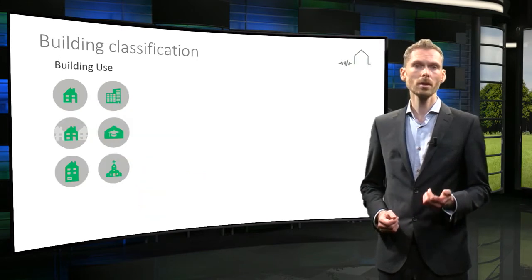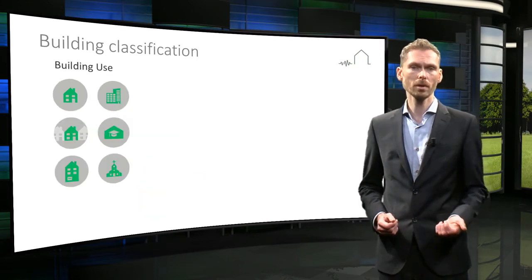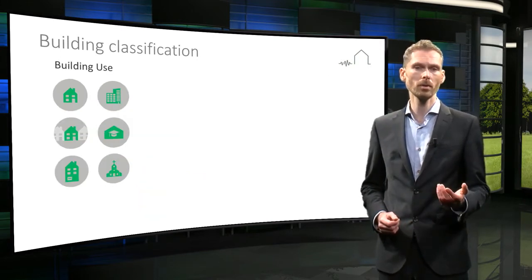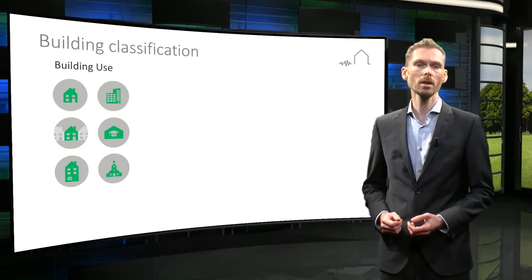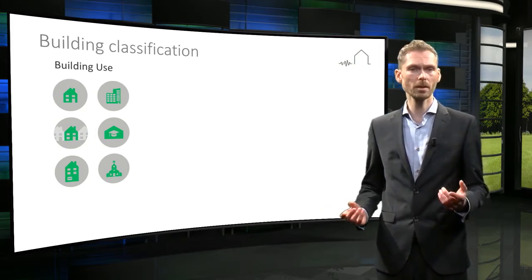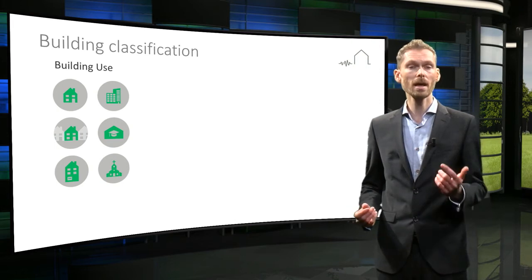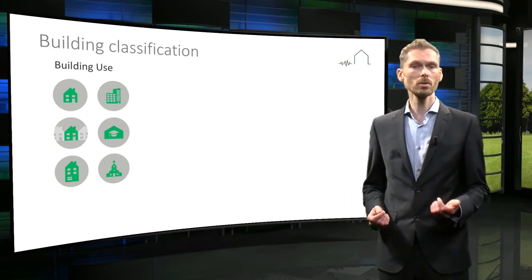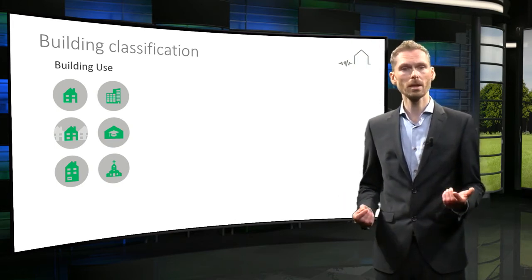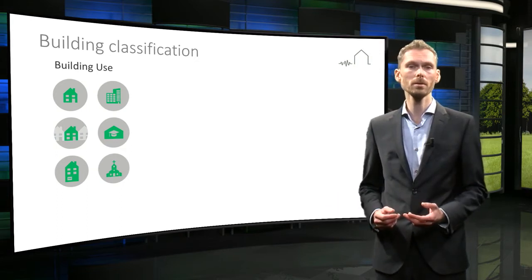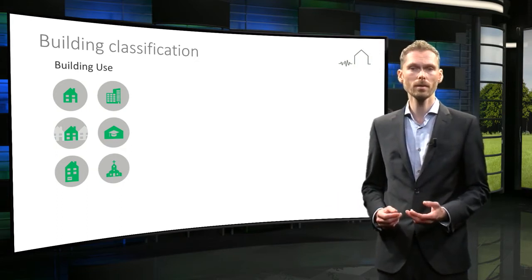First, you look at the main building use, as it is often related to the structural system of a building. The building use can also be directly related to the number of people present in a building and therefore the exposure. For instance, a school differs from a terraced house in both structural system as well as the people present throughout the day.